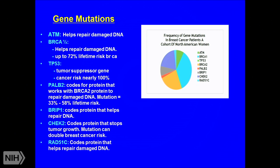Here you can see a representation of the frequency of gene mutations in breast cancer patients in a cohort of North American women. BRCA1 and BRCA2 make up the majority of breast mutations. There are other genes as well, mostly involved in DNA repair, and some tumor suppressor genes. A BRCA mutation confers up to a 72 percent lifetime risk of developing breast cancer, and a p53 mutation carries a cancer risk of nearly 100 percent.